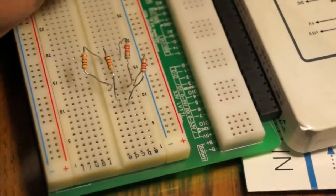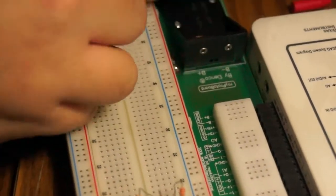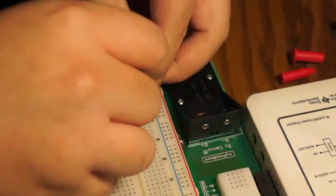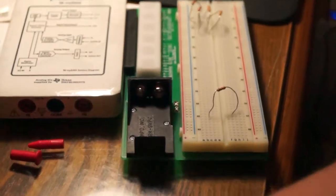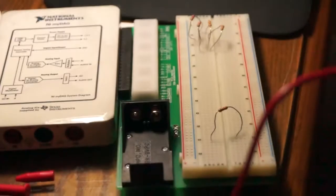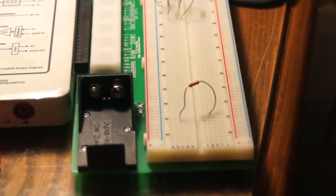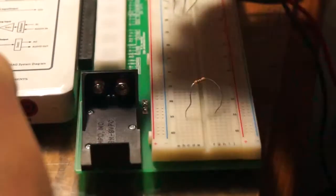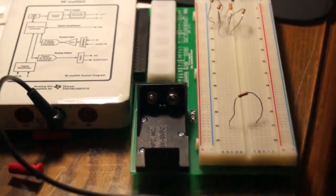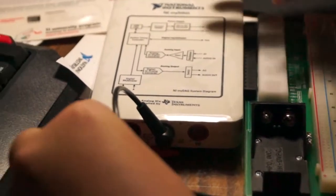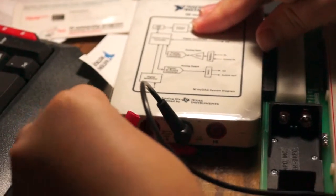But first you should take each resistor and measure the actual resistance. You're going to take each resistor and set it up here. To measure resistance, take these two cables and hook them up to the DAC. The black one always goes in the middle port, and the red cable goes into the left port if you're measuring voltage or resistance, and into the right one if you're measuring current. Since we are measuring resistance, it goes into the left port.